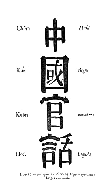Standard Chinese, also known as Modern Standard Mandarin, Standard Mandarin, or simply Mandarin, is a standard variety of Chinese that is the sole official language of China, the de facto official language of Taiwan, and also one of the four official languages of Singapore.